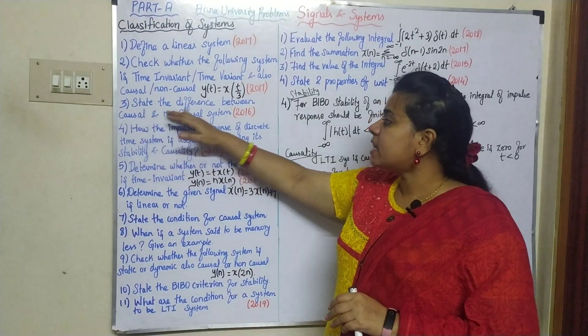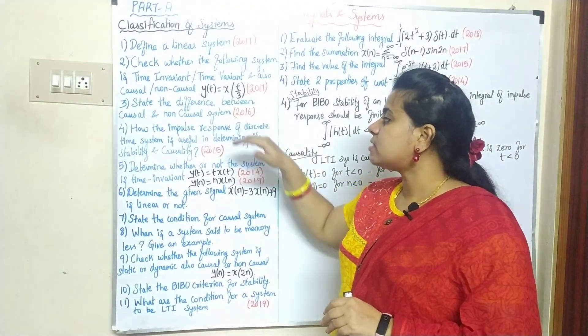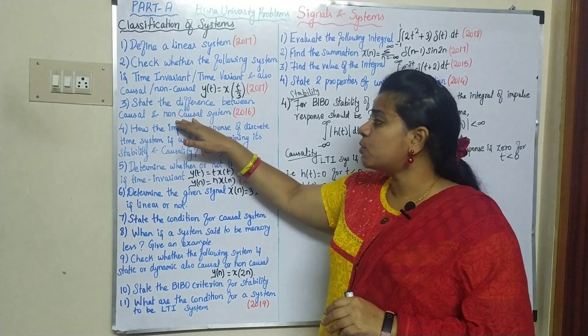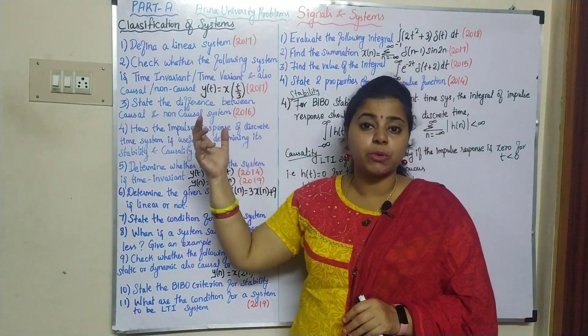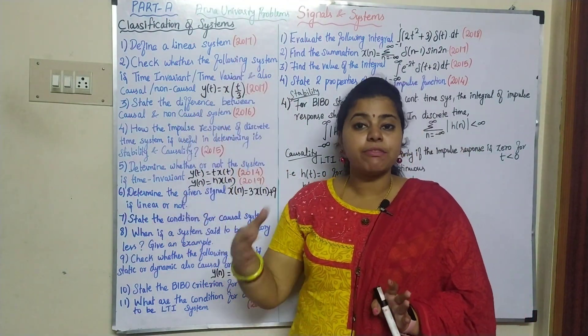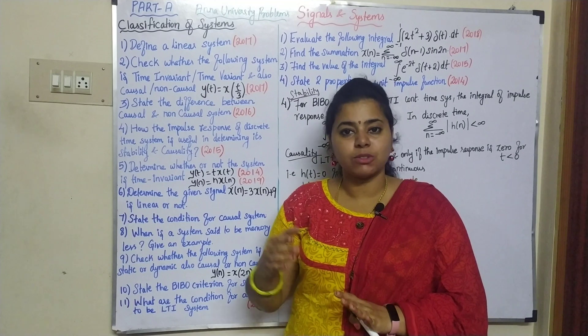Third question: state the difference between causal and non-causal system. This is under classifications of systems. The definitions and examples - refer to the first note.